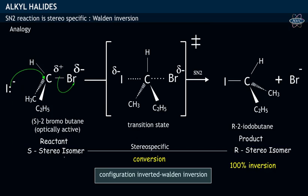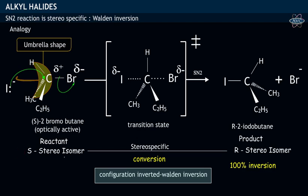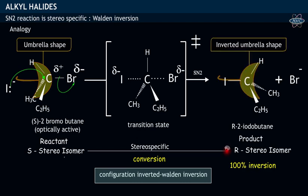If the configuration of the reactant, say S, is supposed to have an umbrella shape, then the product configuration has an inverted umbrella shape.